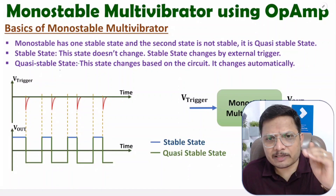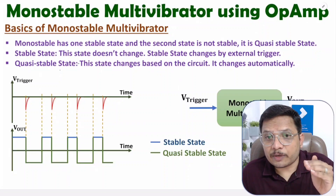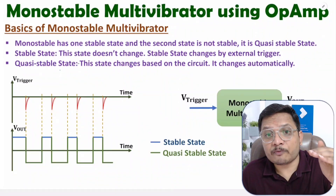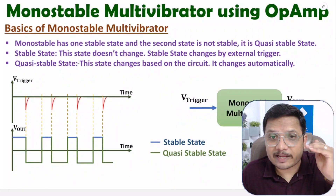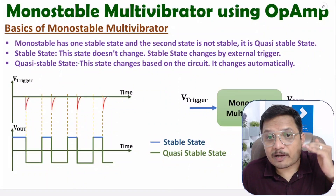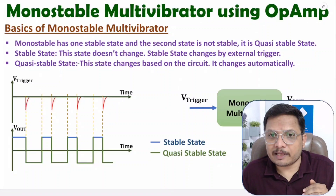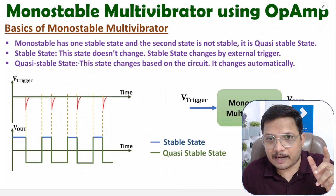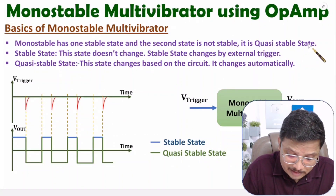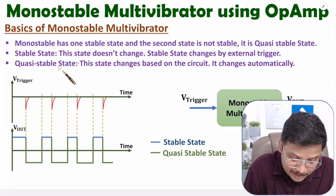What is the meaning of stable state? Stable state means that state will not change on its own. To change that state, you need to give an external trigger. If stable state is plus V voltage, then to change output from plus V to minus V, we need to give a trigger. In quasi-stable state, the state will change automatically. If quasi-stable state is minus V voltage, then output from minus V to plus V happens automatically based on the circuit.